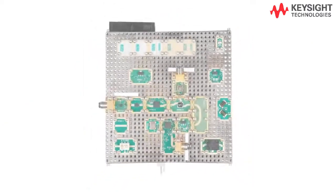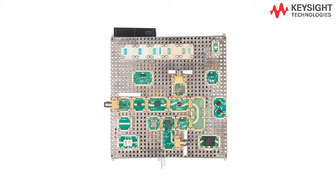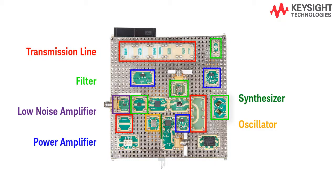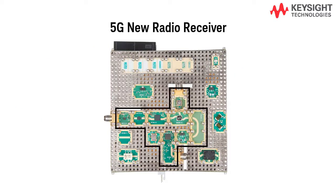The teaching solution has seven labs, which guides students through each component: transmission line, filter, low noise amplifier, power amplifier, oscillator, synthesizer, mixer, and ultimately build up a 5G radio receiver.